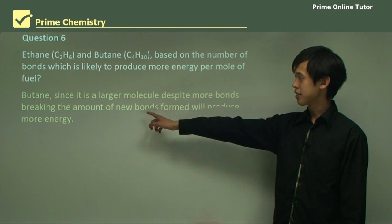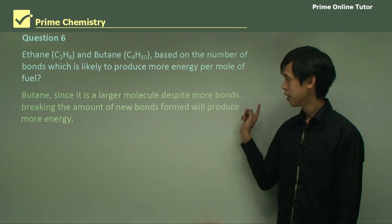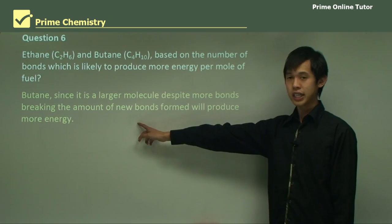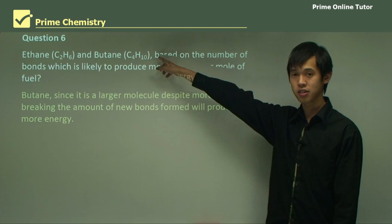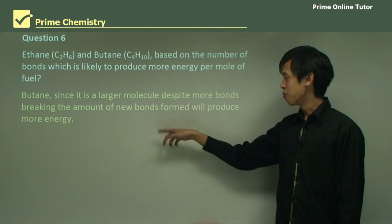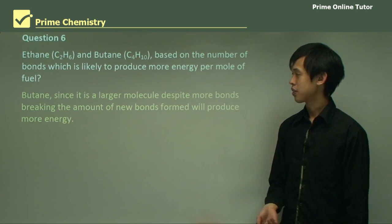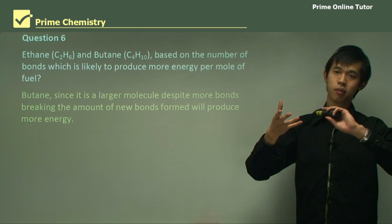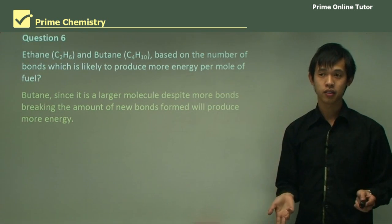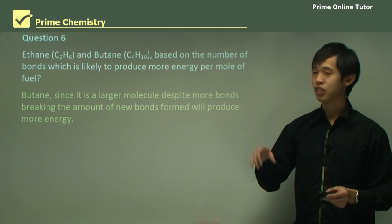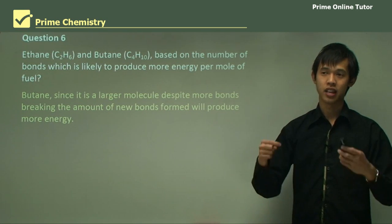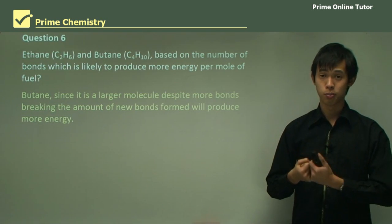So butane, since it is a larger molecule, despite more bonds breaking, so you have to break up all of these bonds, the amount of new bonds formed will produce more energy. So because you've got so many bonds forming when you burn these things, you'll get so much energy out because the energy, remember, is released when you form new bonds.